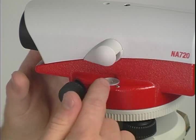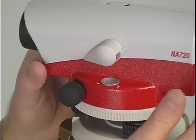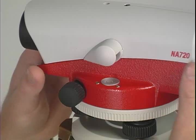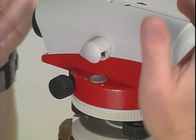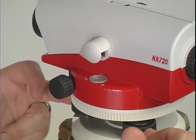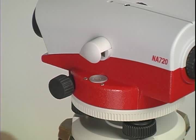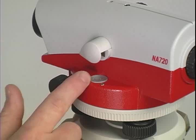Step three is to level the circular bubble. To level the circular bubble, the easiest way to do it is to rotate the level so that the telescope is over two screws. In doing so, it makes setting up the circular bubble much easier.